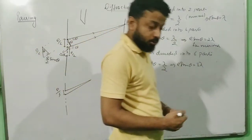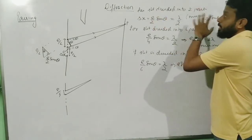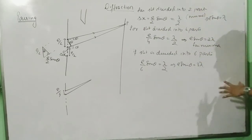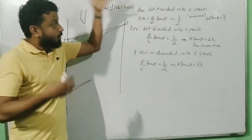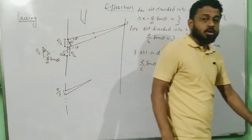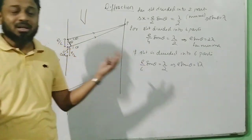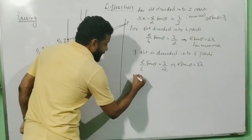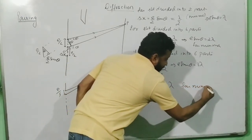That is the reason why we derive with minima — minima is much easier, and maxima are really tough because they are not equally spaced. In general, I can write: e sinθ = Nλ for minima, where N = 1, 2, 3 and so on — N does not start from 0 in diffraction, it starts from 1. This is a very important point: in diffraction, the formula e sinθ = Nλ is for minima.